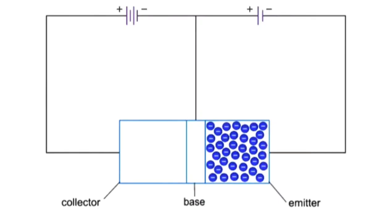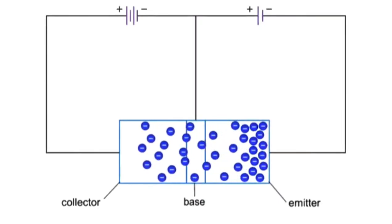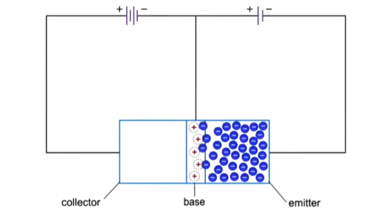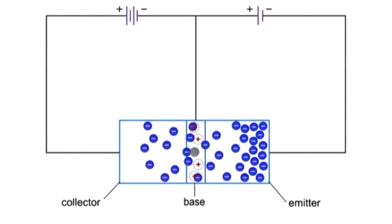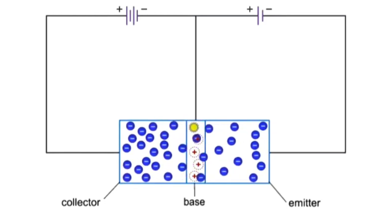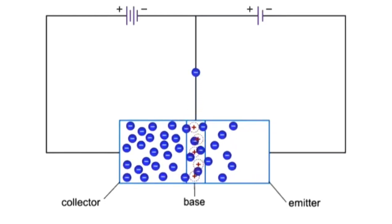Most of the emitter carriers diffuse through the thin base region because they are attracted by the collector region. Some of the electrons are attracted by the holes in the base region and will move off through the right side, shown here. This is a very small amount compared to the current moving through the base into the collector.